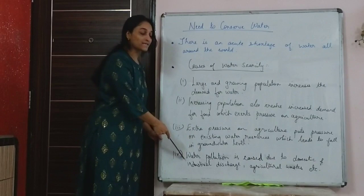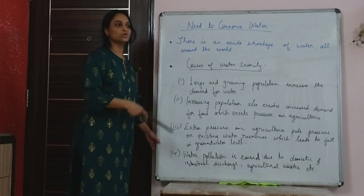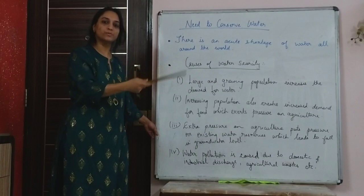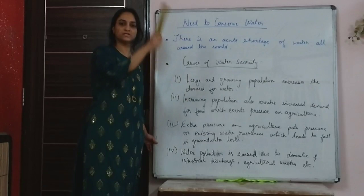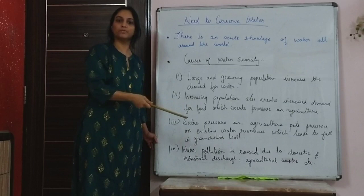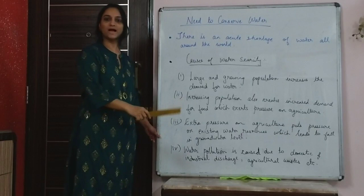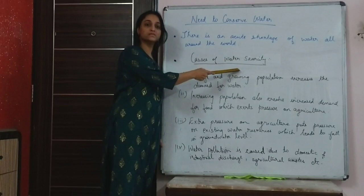Industries also require water for processing, and proper treatment of wastewater is not done — all waste water is discharged into rivers, polluting water bodies. Domestic sewage and waste are also dumped near water bodies. Excessive use of chemical fertilizers and pesticides causes water to seep underground and mix with the water table, polluting it as well. All these reasons cause water scarcity and water pollution, leaving insufficient water for consumption.